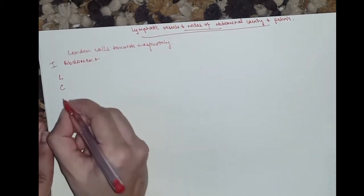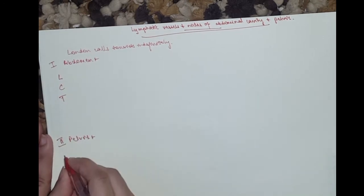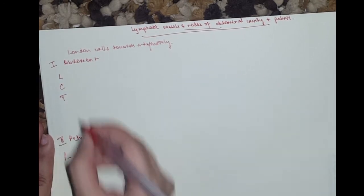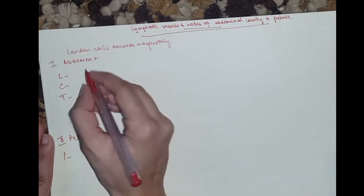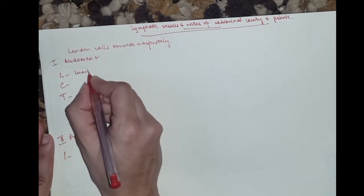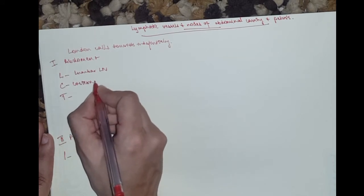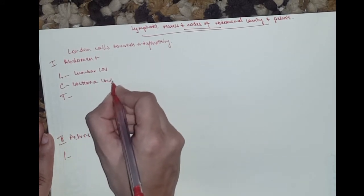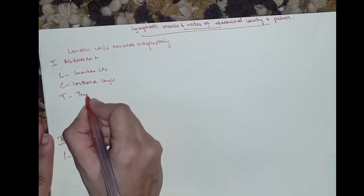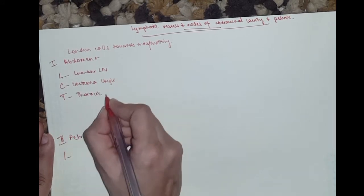Let's write L, C, T and I is over here. Lumbar lymph nodes, cisterna, chile and thoracic duct.